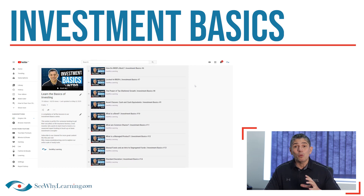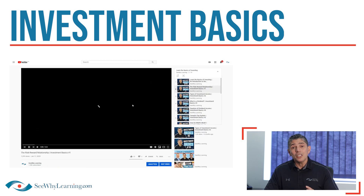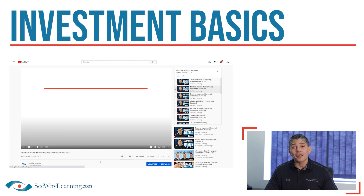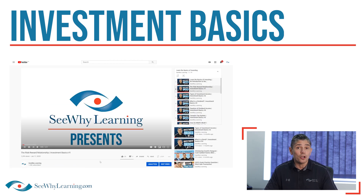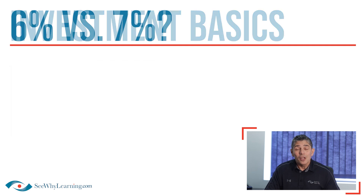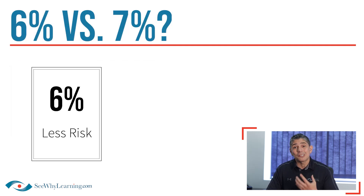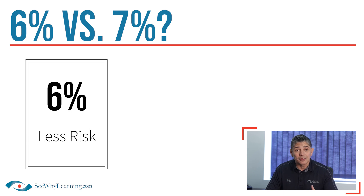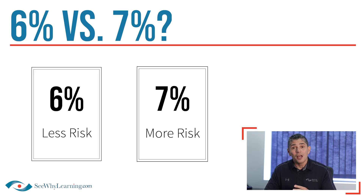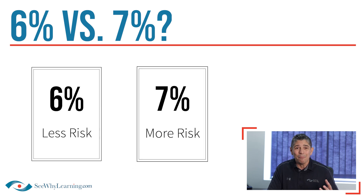In that series, we have a video called the Risk-Reward Relationship, where we talk about the fact that to achieve a higher return, one must generally assume more risk. So what if you were presented with an investment that has an expected return of 6% and a riskier investment that has an expected return of 7%? What does that mean?